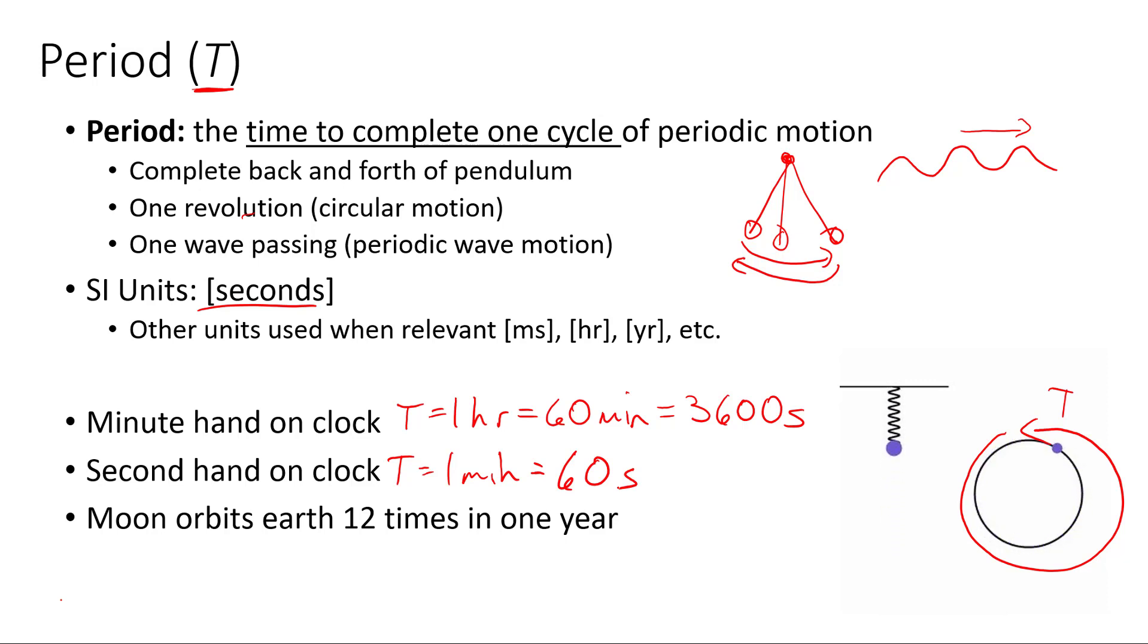The moon orbits the earth twelve times in one year, so if we want to find the period of the moon, we would just say, well, how much time does it take. It's going to be the time over the number of cycles, so that's one year over twelve, which is a decimal. It's about 0.083 years. We could also write that in months. One twelfth of a year is one month.